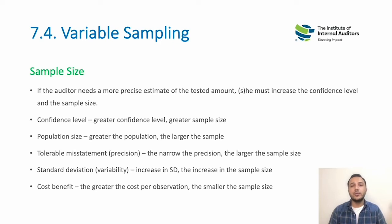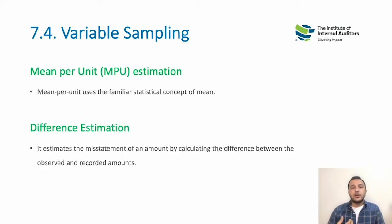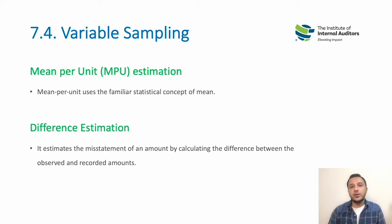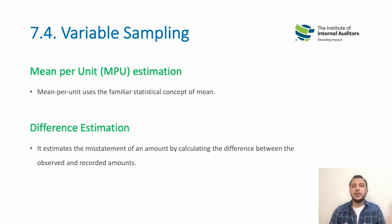The benefit — or the value you get from meeting the objectives after reviewing the data — should always outweigh the cost of obtaining and reviewing that data. There are different approaches within variable sampling that we can use to determine the differences between the value we are reviewing and the actual recorded amount within the company.